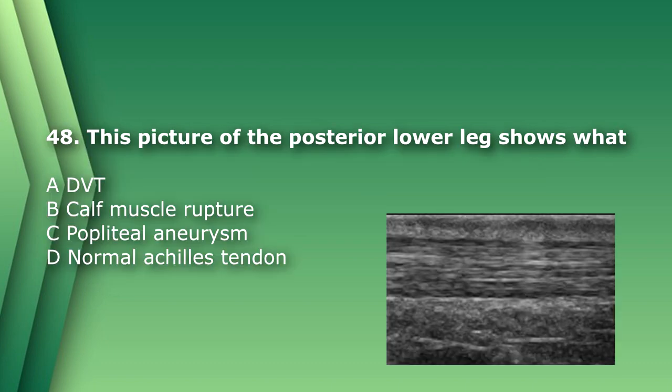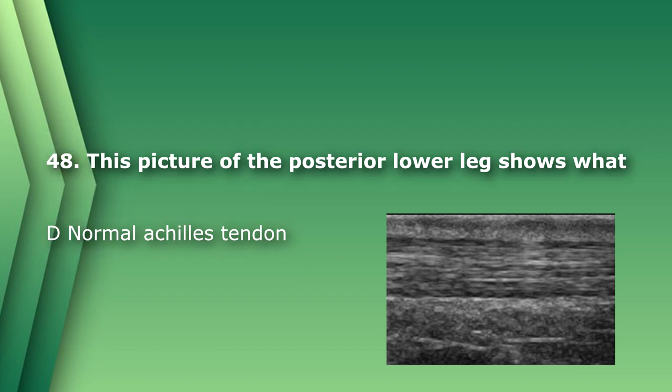Number 48. This picture of the posterior lower leg shows what? A. DVT or deep vein thrombosis. B. Calf muscle rupture. C. Popliteal aneurysm. Or D. Normal Achilles tendon. The answer is D, normal Achilles tendon.